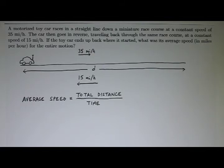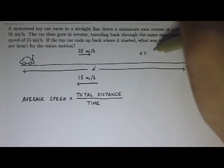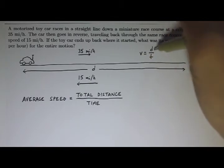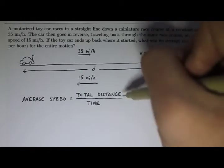So if you went at a constant speed, then we can use the rate equation. We know that V is D over T. The rate is the distance over the time. And so the total distance, well the total distance we know is 2D because he went down the track and then he went in reverse and went back.